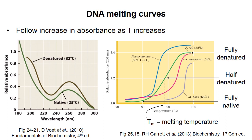These forces that stabilize the double helix can be overcome by heating the solution. At some temperature, the two strands will start to separate. This process can be followed by monitoring the absorbance at 260 nanometers, which is higher for single-stranded DNA than double-stranded. So for any double-stranded DNA, absorbance will increase with temperature as the double helix denatures. Note that denaturation is not instantaneous, but happens over a range of temperatures. The temperature at which half of the DNA is in the denatured state is called the melting temperature.